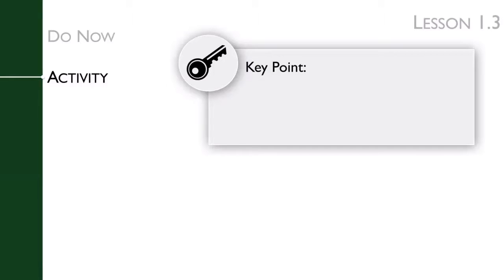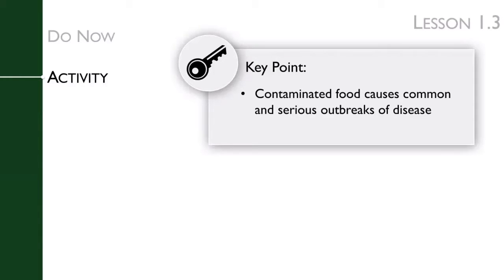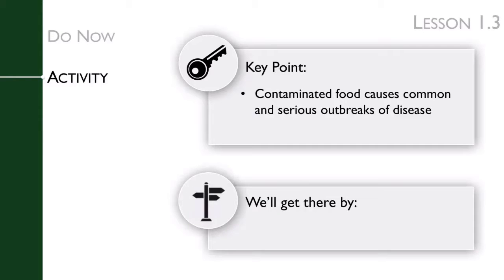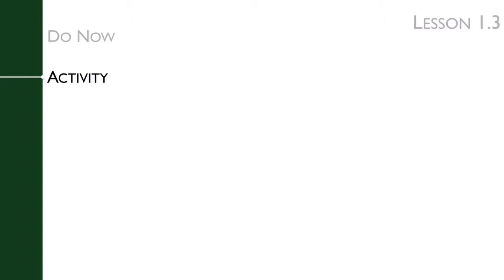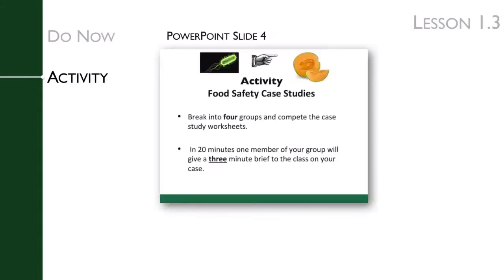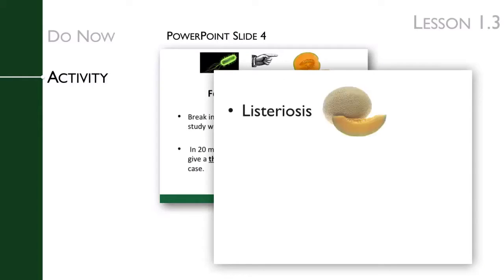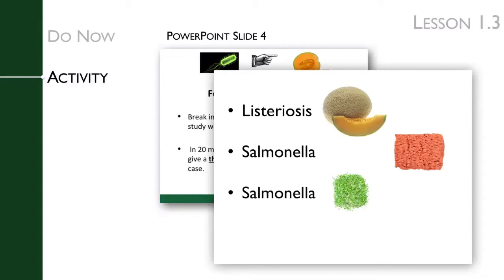The key point of this lesson's activity is that contaminated food causes common and serious outbreaks of disease. We get there by using a jigsaw where students learn about real foodborne illnesses and outbreaks. Students will break into four groups, each reading and answering questions about one foodborne illness. The readings include listeriosis in cantaloupe, salmonella in turkey, Salmonella Enteritidis in alfalfa sprouts, and mercury poisoning in fish. Note that the mercury poisoning reading doesn't fit the template that the other cases follow.